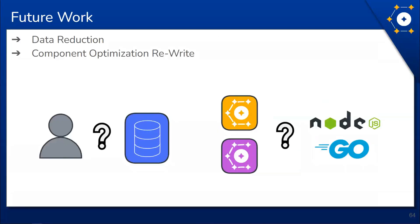Of course, software is never done and we have several ideas for improving and expanding Constellation. Currently all test results are stored in the database — while we prefer this as the default, not all of this data is useful for all users. We'd like to give users the option to perform some data transformation before storing the data. Additionally, both the load generator and data aggregator would benefit from being implemented in a more efficient language such as Go to improve performance and increase the number of VUs a single instance can produce.